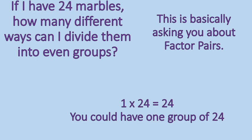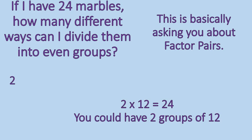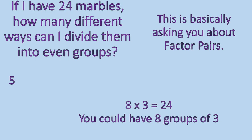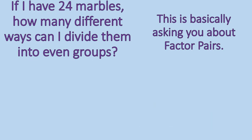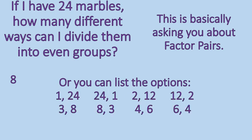So one group could be one group with 24 marbles, or 24 groups with one marble. Two groups with 12 marbles, since 2 times 12 is 24. Twelve groups of 2 marbles — again a factor pair. Three groups of 8, 8 groups of 3, 4 groups of 6, and 6 groups of 4. You can list all the factor pairs: 1 and 24, 24 and 1, 2 and 12, 12 and 2, 3 and 8, 8 and 3, 4 and 6, 6 and 4. Make sure you get all of the factor pairs.